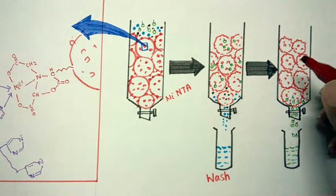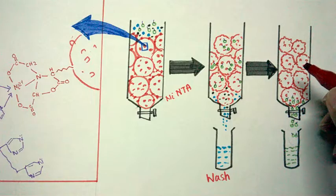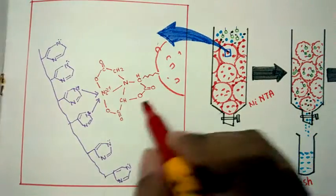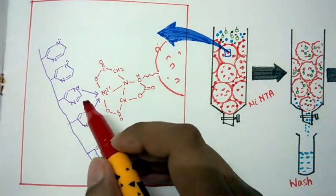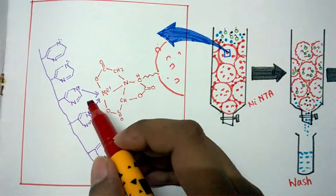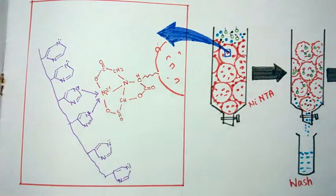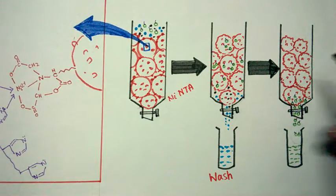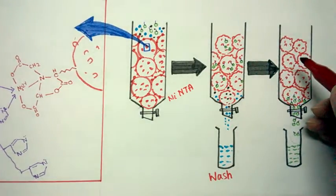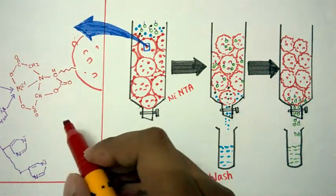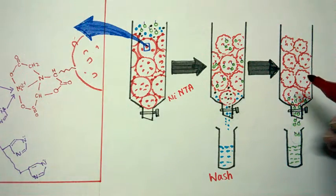So as per elution buffer we would use imidazole. Imidazole is basically this ring type of structure. So histidine also has an imidazole ring. So when we put imidazole in the last step, imidazole will competitively inhibit the histidine hexahistidine tag to get bound with the matrix.